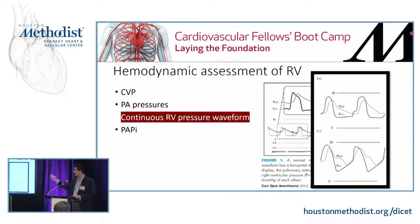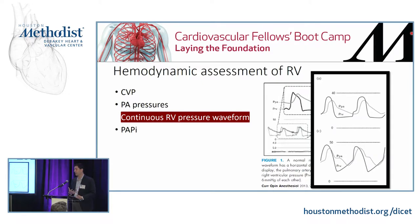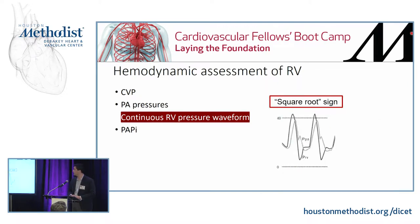In a normal tracing, the diastolic pressure is kind of flat. As RV dysfunction starts to develop, the diastolic pressure starts to rise and you get equilibration between the RV diastolic pressure and the PA diastolic pressure. As that continues to progress, you start to get what's called a square root sign — basically, immediately at the start of diastole the RV diastolic pressure equilibrates with the PA pressure.